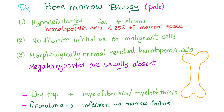Megakaryocytes are usually absent. Dry tap can be associated with myelofibrosis — your bone marrow is fibrosed, you cannot aspirate it. Granuloma in the bone marrow can be due to an infection leading to the bone marrow failure.